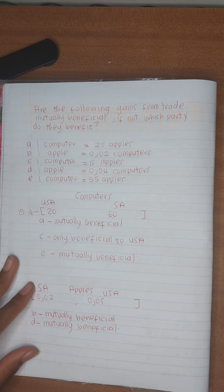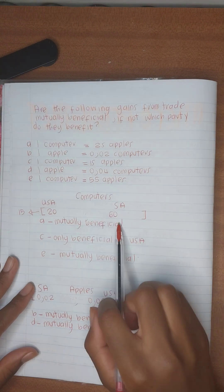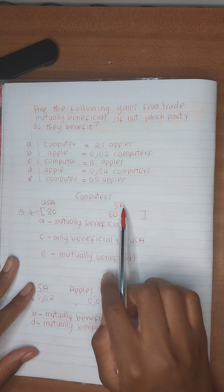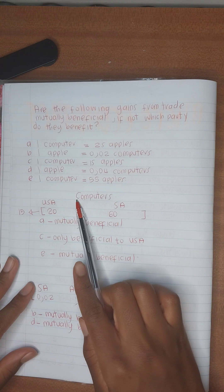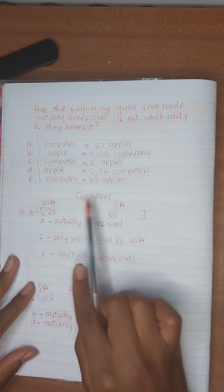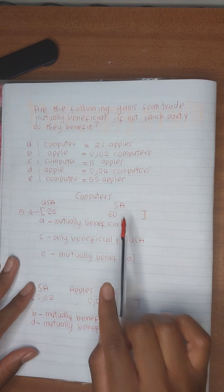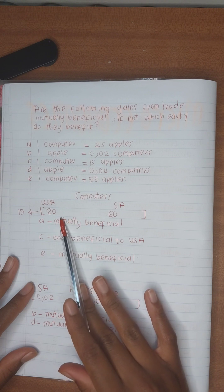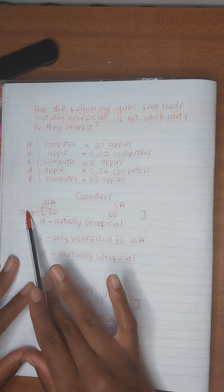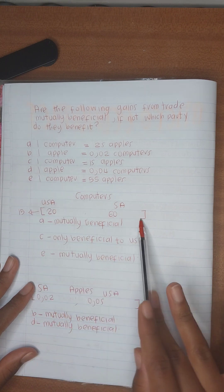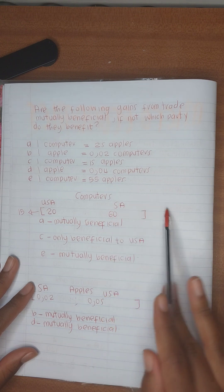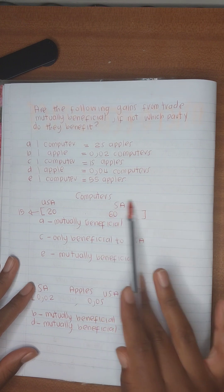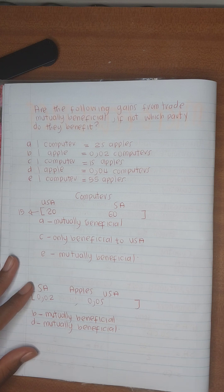That's how you determine gains of trade and whether something is mutually beneficial or not. For example, if it said one computer for 65 apples — 65 is outside the interval on the South Africa side, so it would only benefit South Africa. My advice: write the opportunity costs you calculated, write their intervals with the lowest on one side and the highest on the other, and put the country name above its opportunity cost value. If the trade falls within the interval, it's mutually beneficial. If it falls outside to one side, it benefits only the country whose name is on that side.